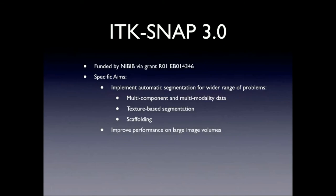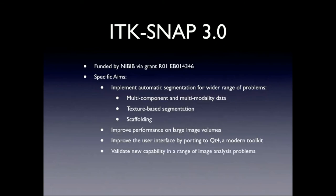The second aim is to improve performance on large image volumes. Right now, SNAP doesn't do too well if your volumes are above 512 by 512 by 512, because it uses more memory than it has to, so we can do some smart compression to reduce memory use. A big one is also to improve the user interface by porting to a more modern GUI toolkit called QT4. And we also have validation, training, and outreach aims, which is part of the reason we're doing this workshop.